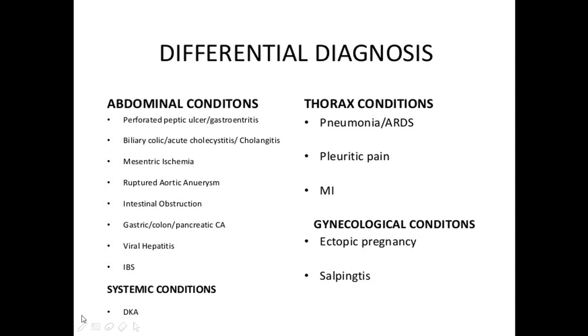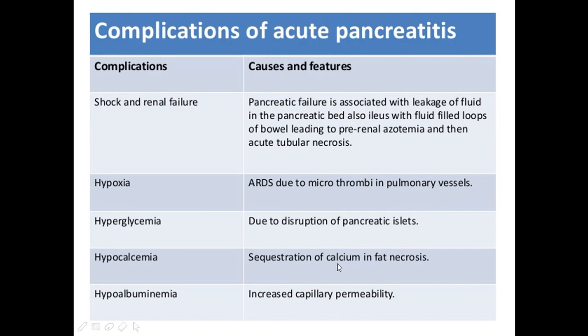Systemic conditions include diabetic ketoacidosis. Thoracic conditions include pneumonia, ARDS, pleuritic pain, and myocardial infarction. Gynecological conditions include ectopic pregnancy and salpingitis.